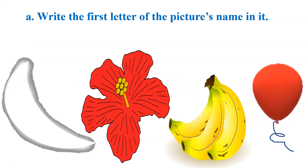Next picture is moon — M, moon. Letter M has phonic sound M, so the moon's name starts with letter M. Next picture is flower — ph, ph, flower. Which letter has sound ph? Correct, that is F. Flower's name starts with letter F.